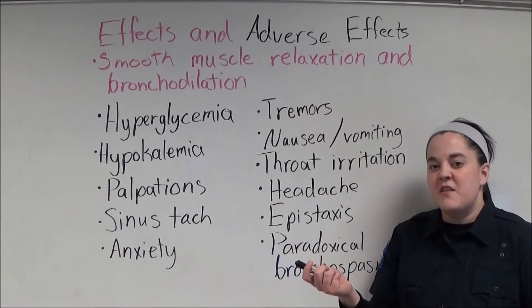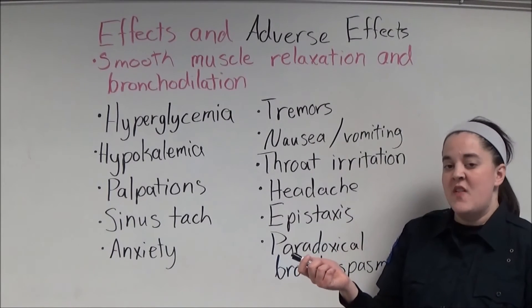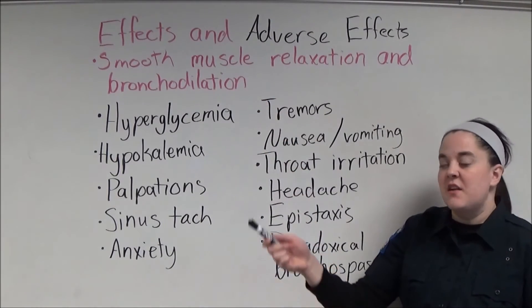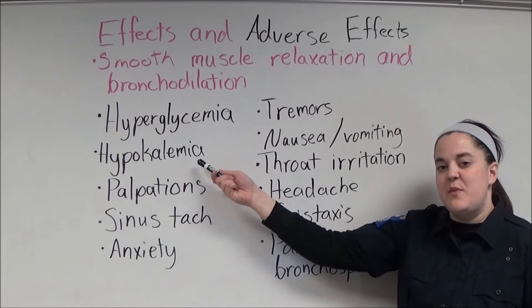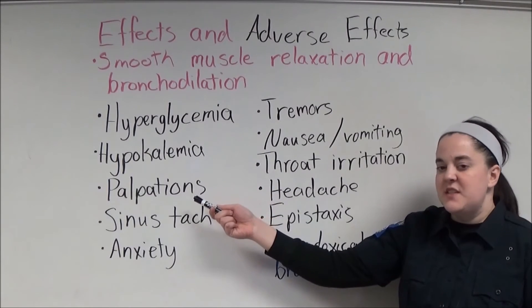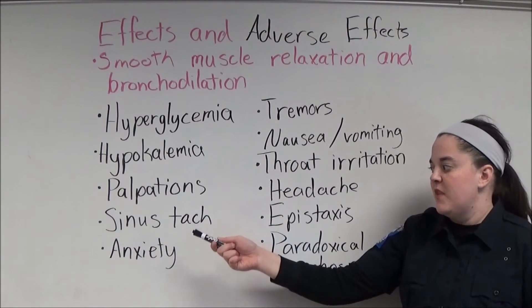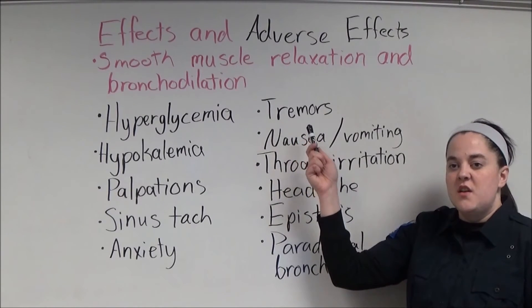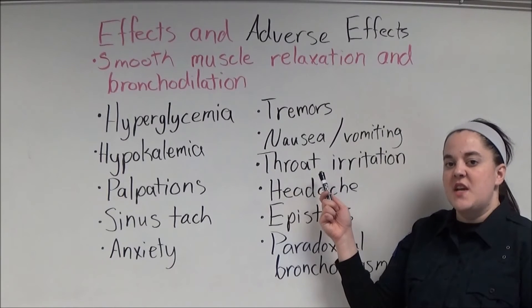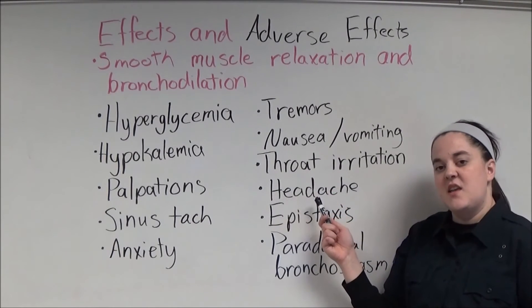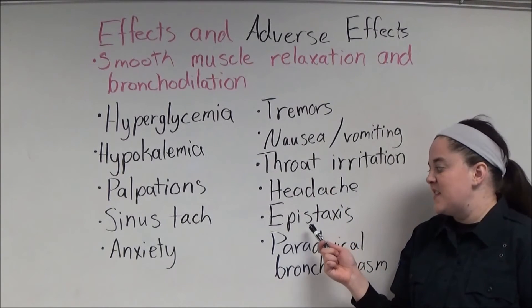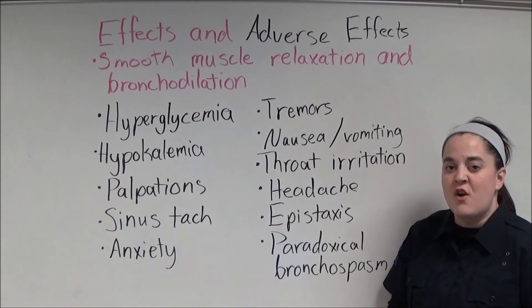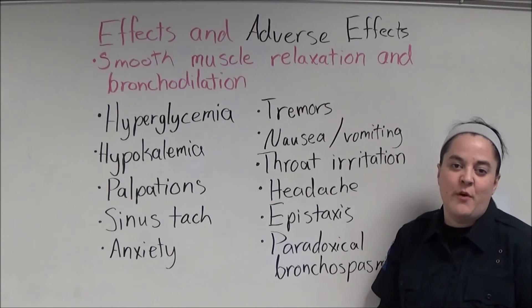The intended effect of albuterol is smooth muscle relaxation and bronchodilation. Adverse effects include hyperglycemia, hypokalemia, palpitations, sinus tachycardia, anxiety, tremors, nausea and vomiting, throat irritation, headache, epistaxis, and paradoxical bronchospasm, which is bronchospasm that occurs after the administration of albuterol.